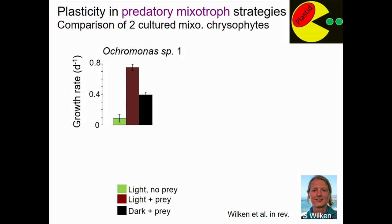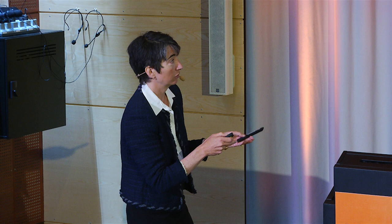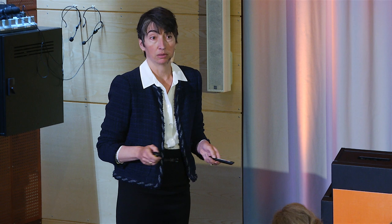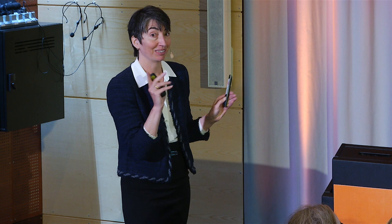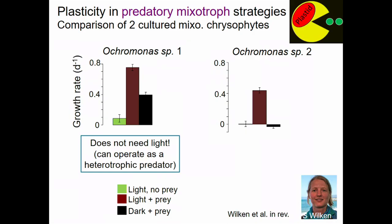Here you're looking at Ochromonas — in the stramenopile part of the tree related to diatoms — but this is an organism that can eat, unlike diatoms. Here you see it in the light with no prey, in the dark with prey, and in the light with prey. Under these conditions it loves light and prey — that's its optimal. But it does pretty well in the dark with prey, with no light at all, acclimated over many generations. This is a guy that doesn't need light per se; it can operate as a heterotrophic predator, but we keep it in the primary producer box in global models.